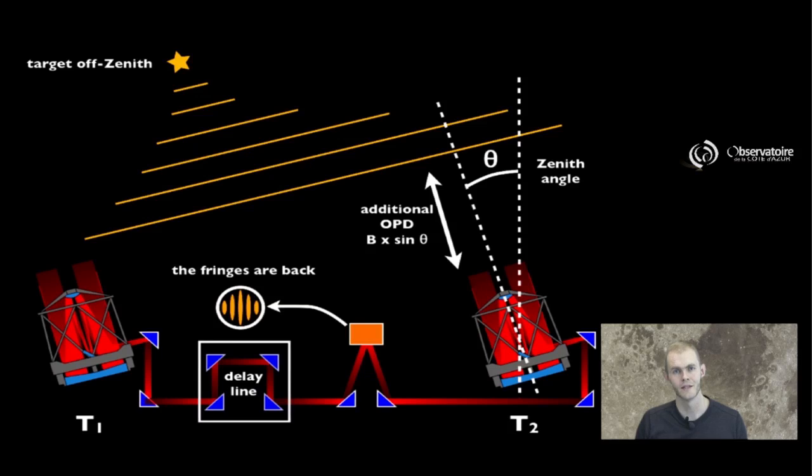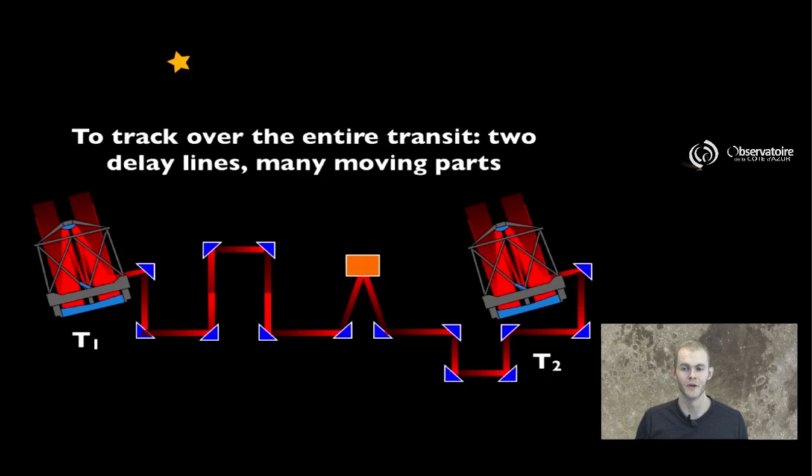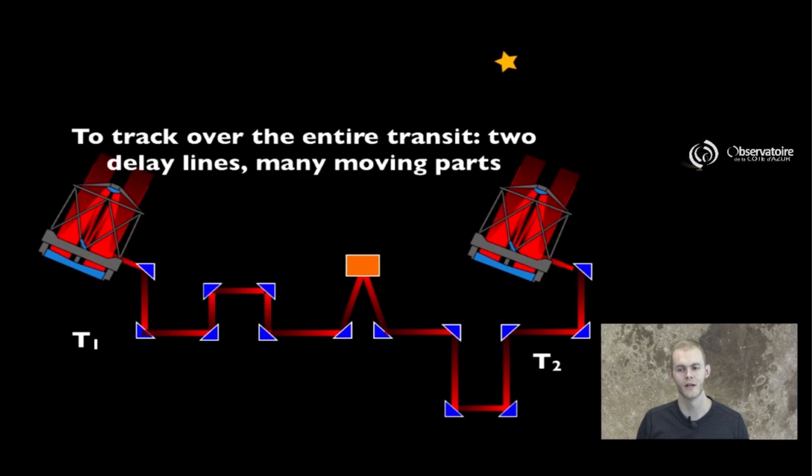We call this additional light extension a delay line. And this, of course, needs to be adjusted as the pointing changes as the objects move across transit. And of course, if you want to track over the entire transit before and after the star you observe, or the target you're interested in observing, crosses the meridian, then you're going to have not just one, but two delay lines and many moving parts in order to make sure that as the star crosses the sky, you are maintaining equal paths on the two interferometric arms.